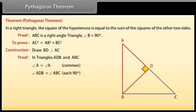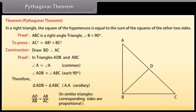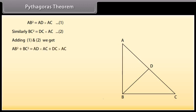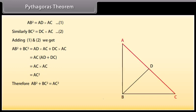Angle ADB equals angle ABC, each 90 degrees. Therefore, by AA corollary, triangle ADB is similar to triangle ABC, which implies AD/AB = AB/AC. Therefore AB² = AD·AC (equation 1). Similarly, BC² = DC·AC (equation 2). By adding equations 1 and 2, AB² + BC² = AD·AC + DC·AC = AC·(AD + DC) = AC·AC = AC². Therefore, AB² + BC² = AC². Hence proved.